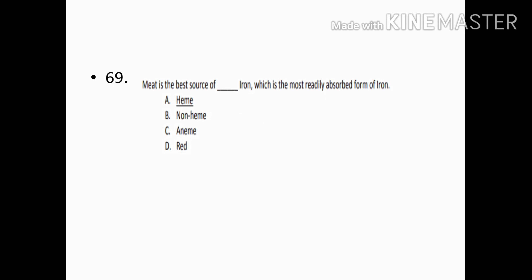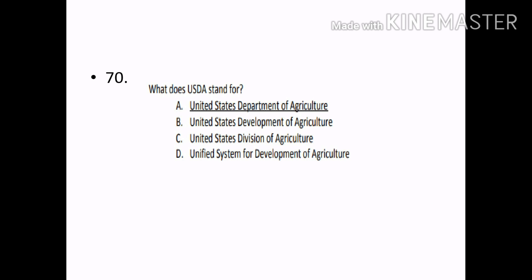Meat is the best source of heme iron, which is the most readily absorbed form of iron. Options — Heme, Non-heme, Anime, Red. Correct answer: Option A — Heme iron.